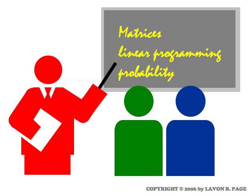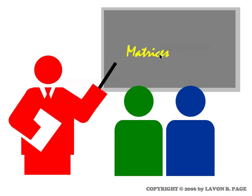This class consists of three primary topics: matrices, linear programming, and probability. Matrices are an important tool, and in fact matrices will be used as a tool in the other two topics. So the first thing we need to learn is a little bit about matrices as a tool, and that's the subject of this movie.